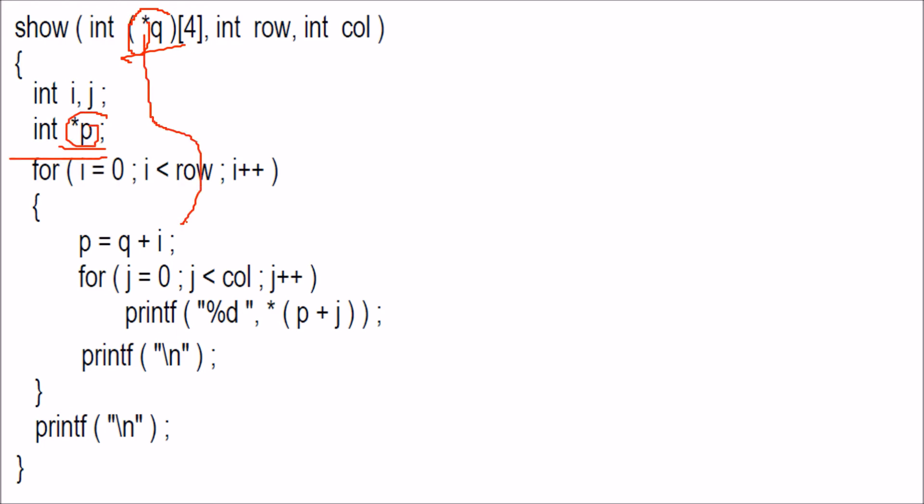When this q comes, we know q is the initial address, so we add i number of rows. If this is row 0, this is 1, this is 2. We are adding 0, so we are at the first row. If we add 1, we are at the second row. If we add 2, we are at the third row. This is how we navigate through the rows.